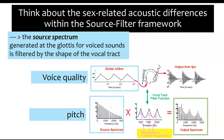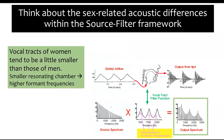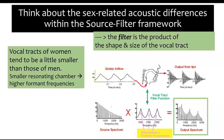Now we can move on to the output spectrum as it's affected by the filter. Vocal tracts in women tend to be a little bit smaller than those in men, so you'd expect higher formant frequencies, just as with any smaller resonating chamber. The filter part of the source-filter model is the product of the shape and size of the vocal tract.